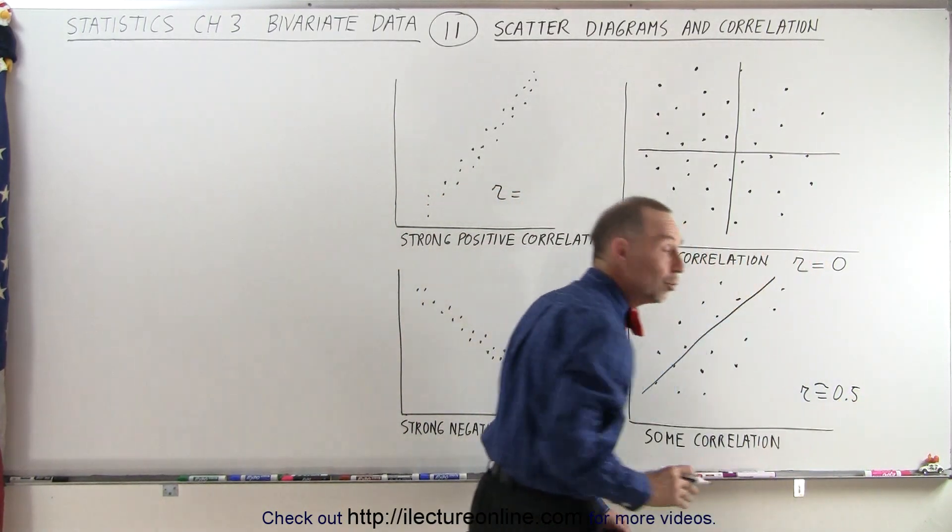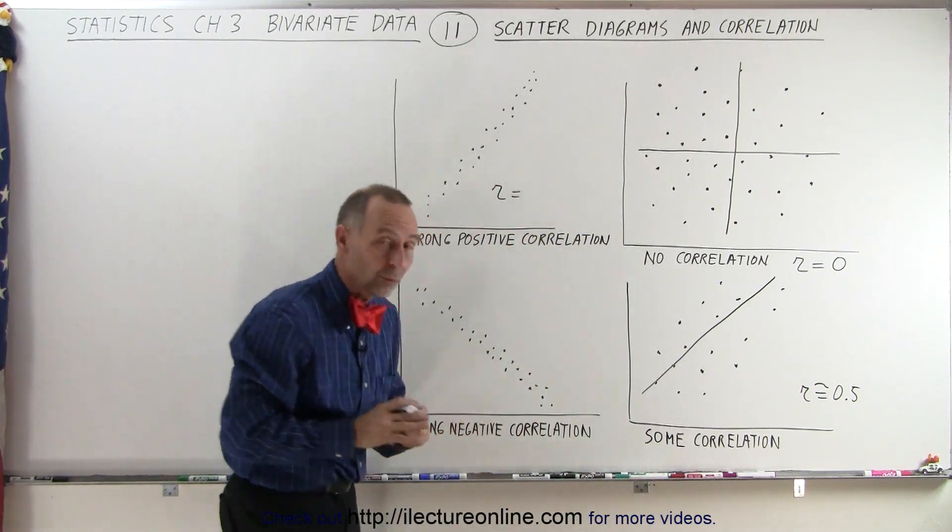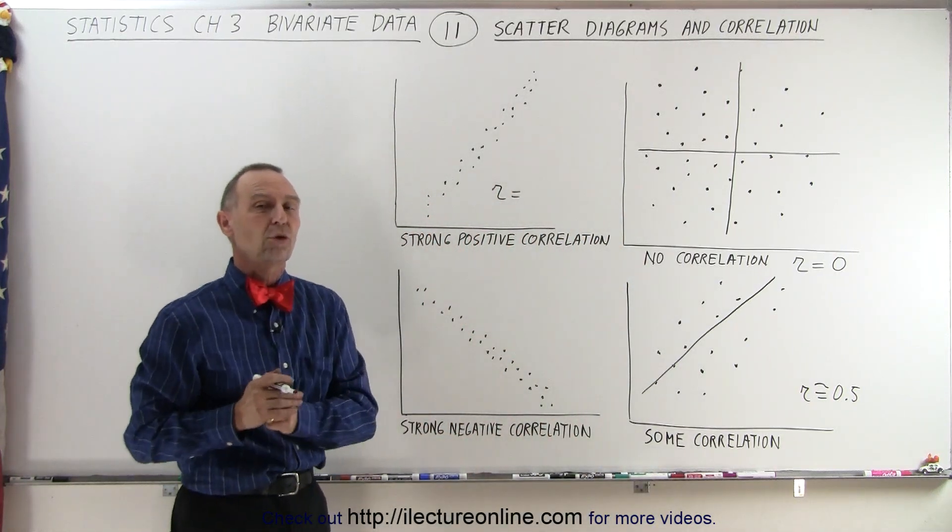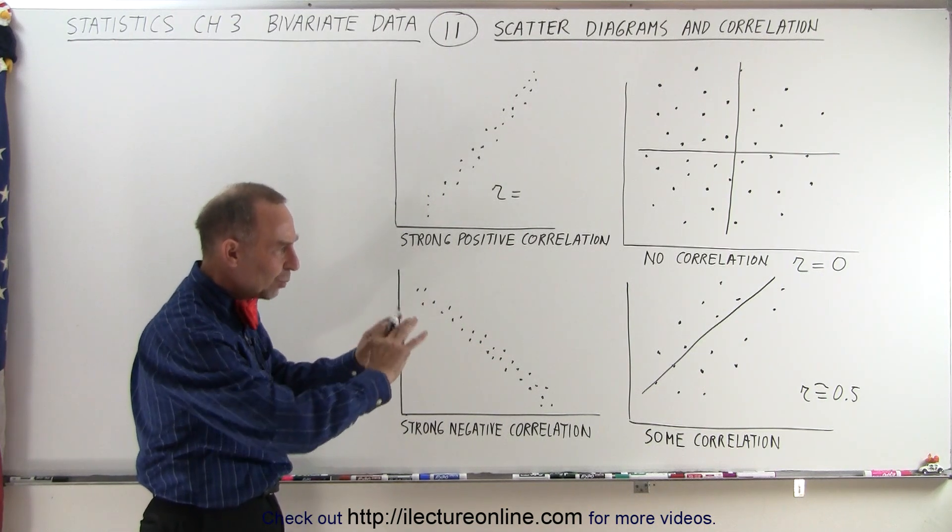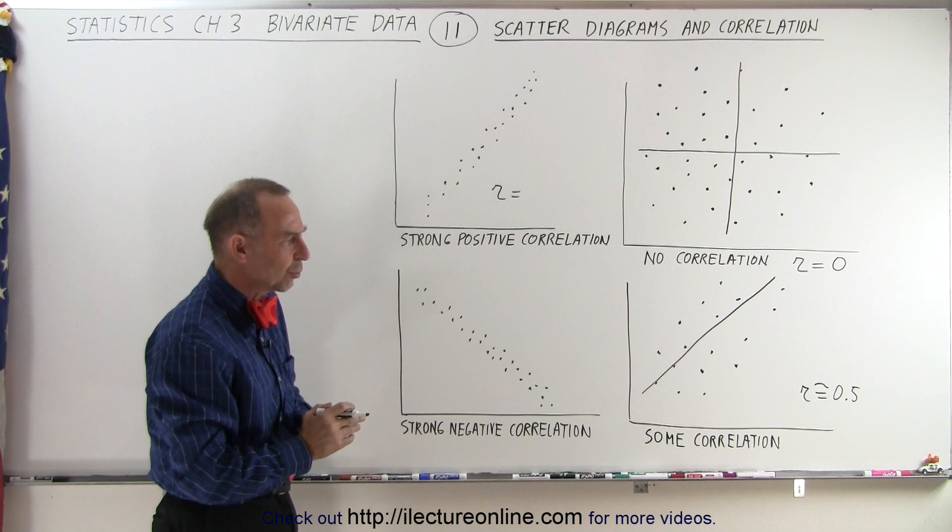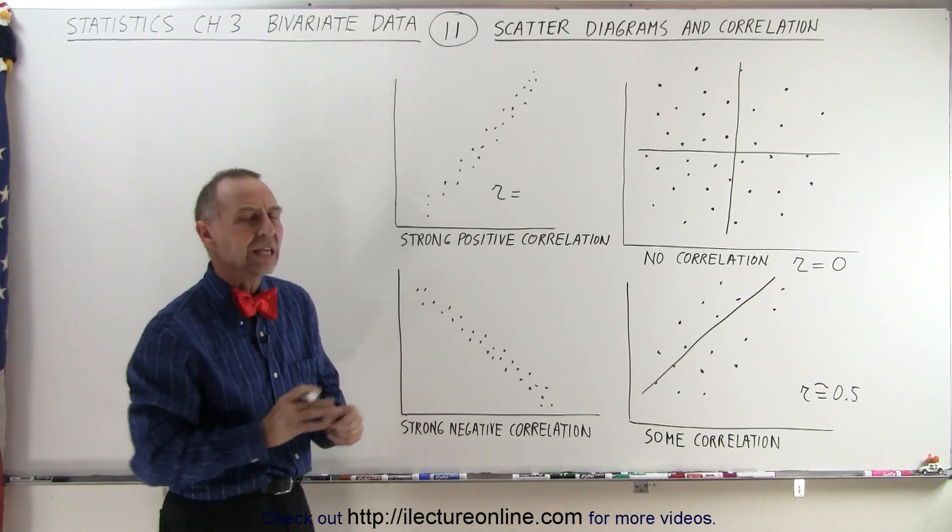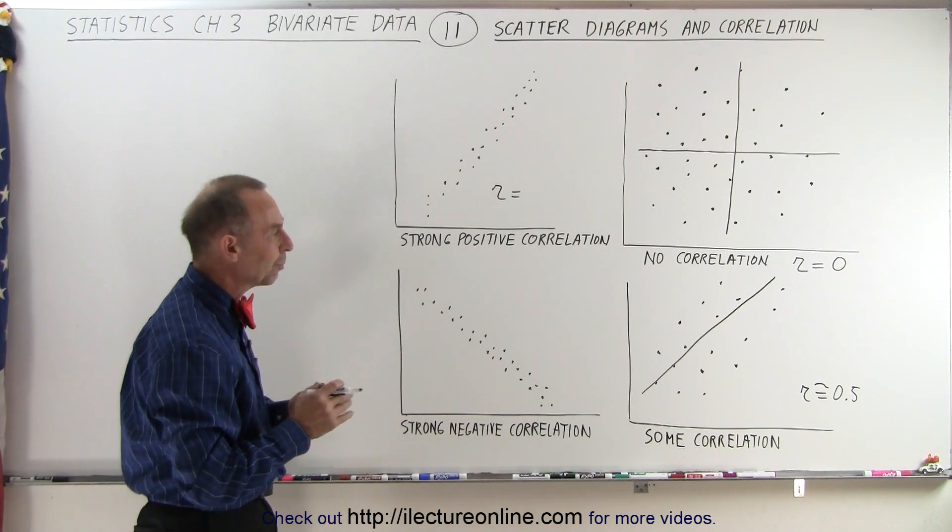Of course, what we're going to do in the videos to come is we're going to show you how to exactly calculate those correlation coefficients, and really how to interpret them. But at least we can get a visualization of what's going on here, and we can see that roughly the correlation coefficient is about 0.5.